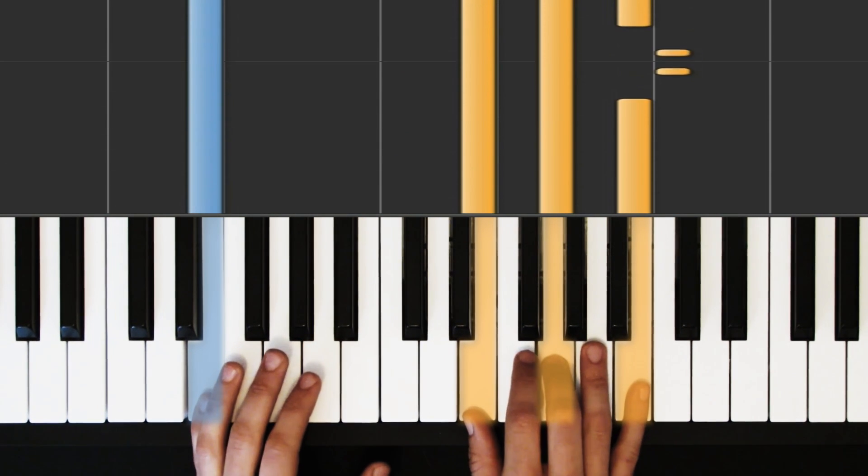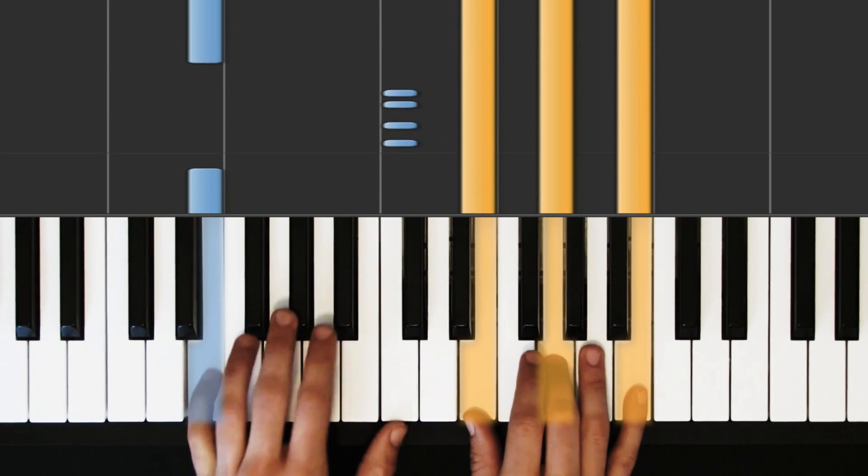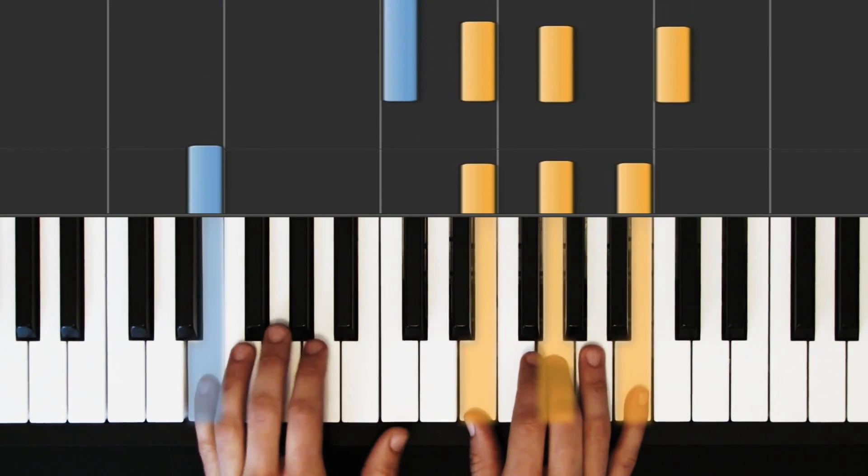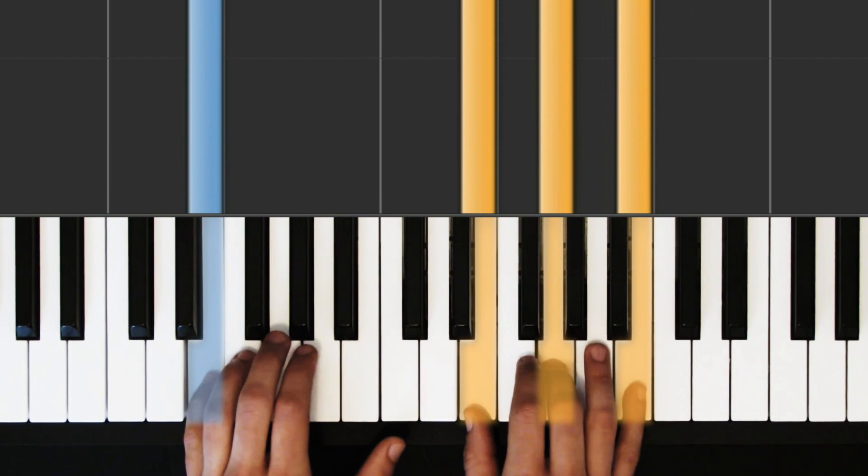Next up, right hand only moves one note down. The top C moved down to a B. Left hand went from this C down to an E. So we're going C to there.